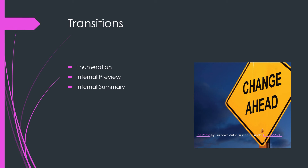Transitions take the audience by the hand, saying 'now that we talked about X, we're going to talk about Y.' Type one is enumeration — as simple as first, second, third. Type two is an internal preview — just like the blueprint in your introduction. For example, if talking about yoga, you might say: 'Now I'm going to talk to you about how practicing yoga can help achieve mental clarity.' That's an internal preview — you're previewing what's next.